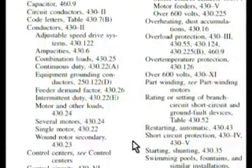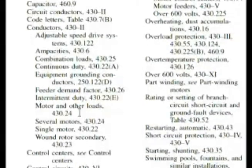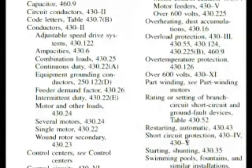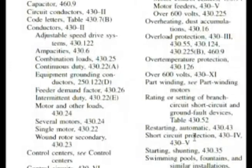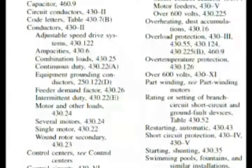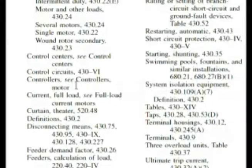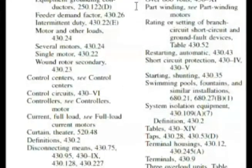Here's one: motor and other loads — possibly that could be in there. There's a motor demand factor. We're not getting something that we really like yet. Short circuit protection — that could work as a controller. We're still not finding something here. And we've got controllers, and it says see controller's motor. I'm going to go up just a little bit because I see something in this other column.